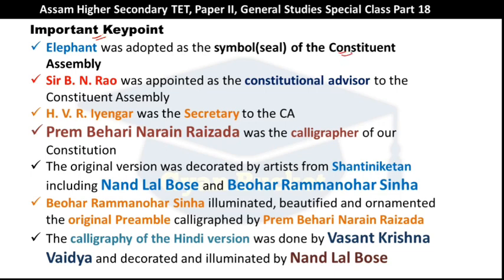The Constituent Assembly adopted the elephant as its symbol or seal. The Constitutional Advisor appointed to the Constituent Assembly was Sir B.N. Rau. The Secretary of the Constituent Assembly was H.P.R. Iyengar.